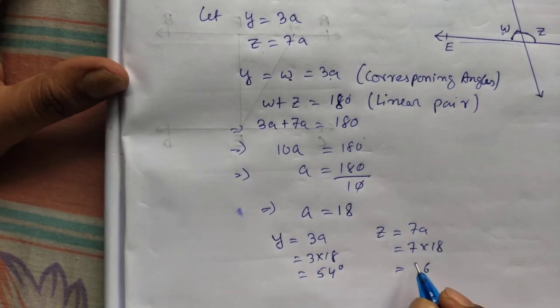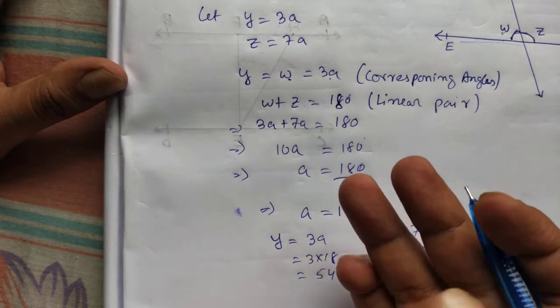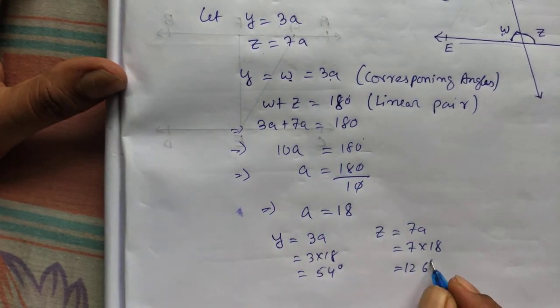7 into 18 equal to how much? 7, 8 is 56. 7, 1 is 7. 126 degree. We got y and z.